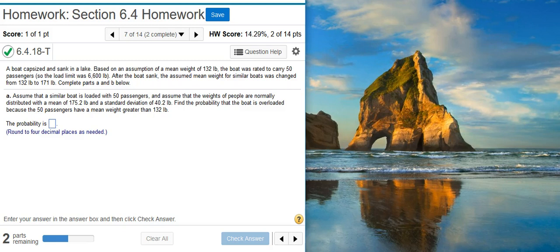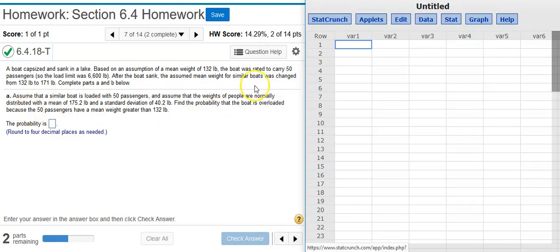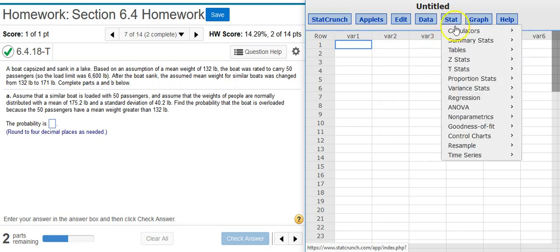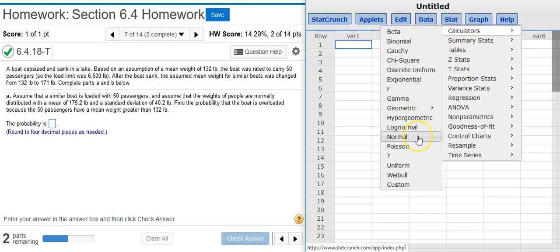To solve this, I'm going to use the normal calculator inside StatCrunch. I know I need the normal distribution because it says here that the weights are normally distributed. So, inside StatCrunch, I'm going to pull out my normal calculator by going to Stat, Calculators, Normal.